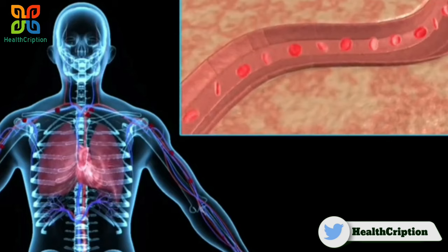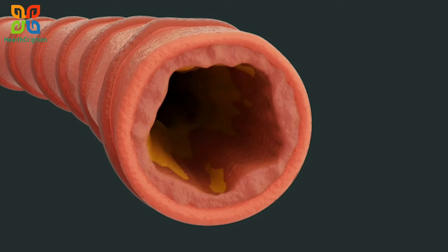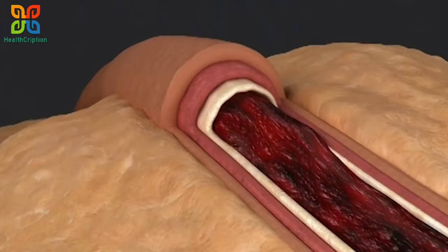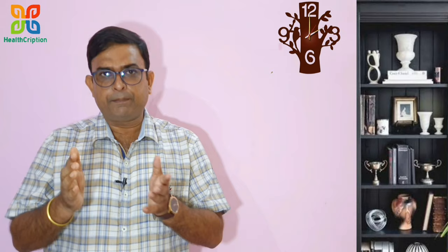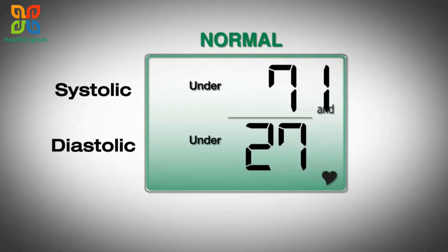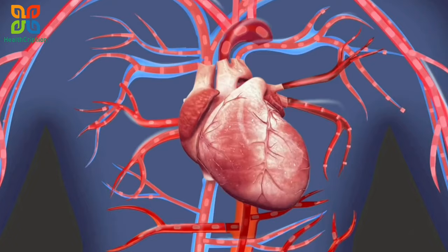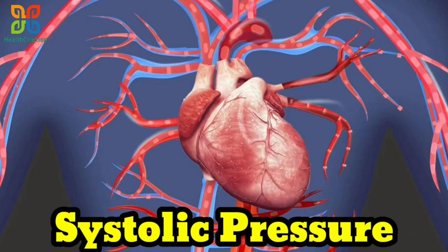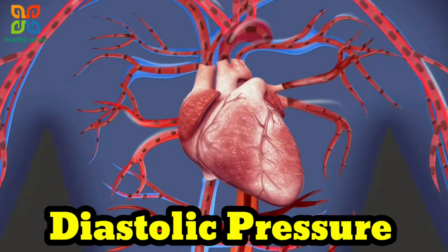What does blood pressure mean? When triglyceride and cholesterol affect blood flow, the heart has to work harder. This is what we call high blood pressure. The normal blood pressure is 120 by 80 mmHg. 120 is the systolic pressure and 80 is the diastolic pressure.